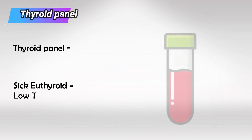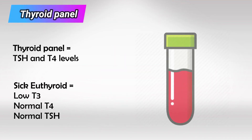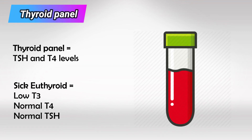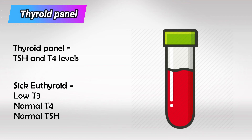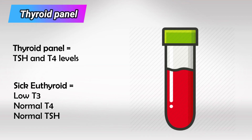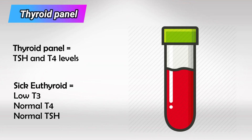We cannot measure T3 levels directly because they're found inside the organs and not in the circulation. So when we talk about the thyroid panel, we are referring to TSH and T4 levels.